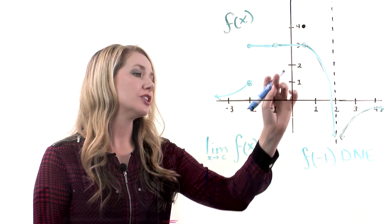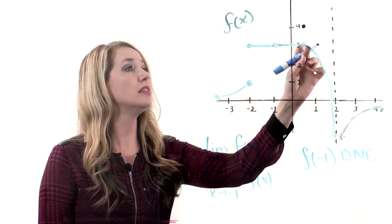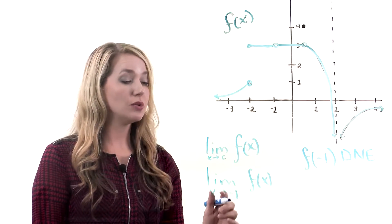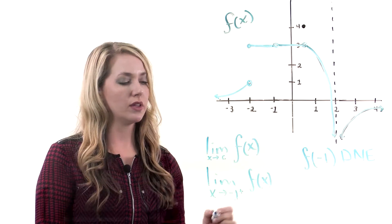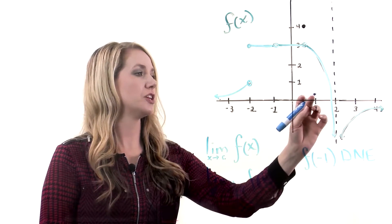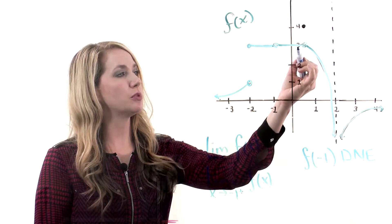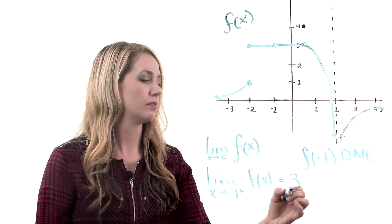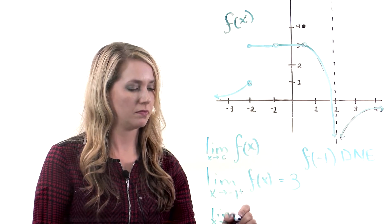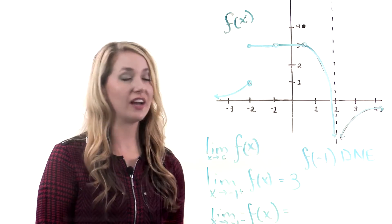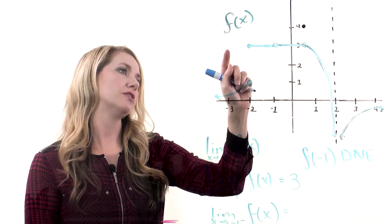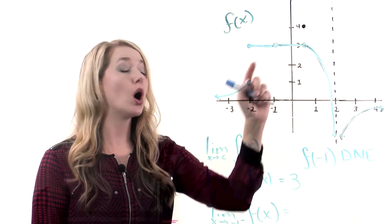Looking at my graph, there are two ways to get close to x equal negative 1 on the blue graph: I can come in from the right, or I can come towards x from the left. I'll denote the limit as x approaches negative 1 from the right with a little plus sign. The limit as x approaches negative 1 from the right: as x approaches negative 1, the y value is approaching 3. Now for the limit as x approaches negative 1 from the left — as x approaches negative 1 from the left, the y value is also approaching 3.